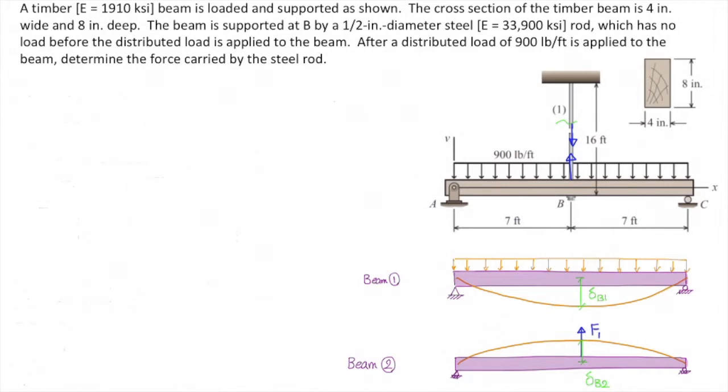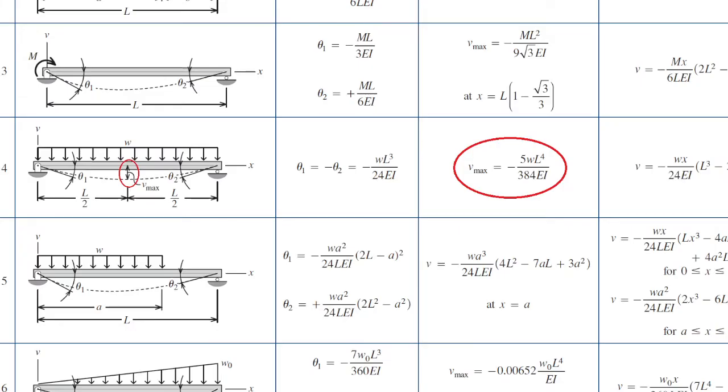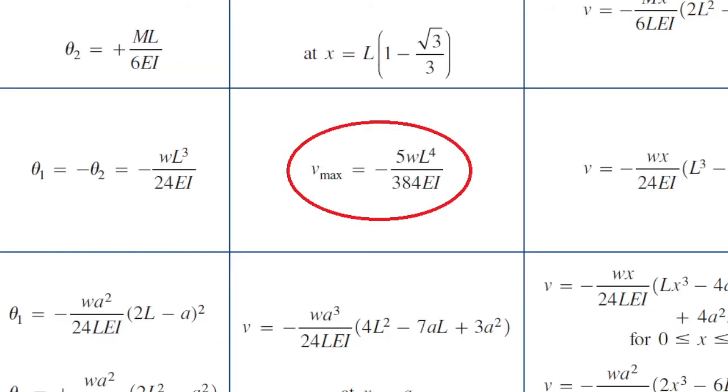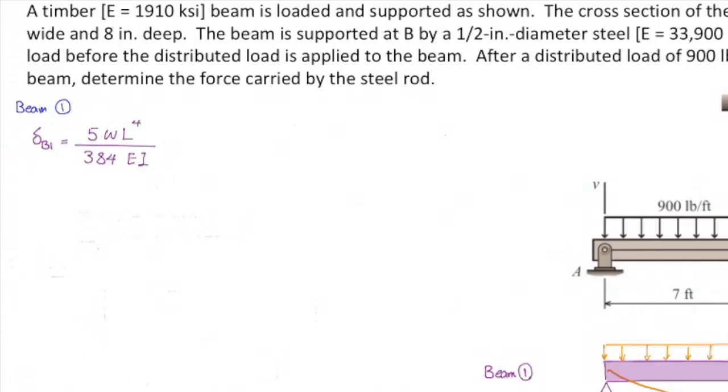Now let's solve the problem numerically. The first step is determining deflection of the first beam at the middle. Let's call that delta B1. To determine delta B1, we get back to the table and determine how much is the deflection of a simply supported beam subjected to distributed load at the middle. Here we can use the maximum deflection because we know the maximum deflection of this beam is located at the middle of that. So the equation is 5WL to the fourth divided by 384 times EI. Let's plug the values into this equation. W is 900 pounds per feet. I need to convert that into pound per inch. So I will divide that by 12. That would be equal to 75 pounds per inch.